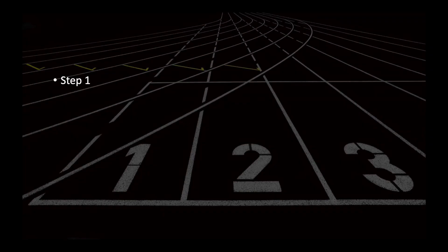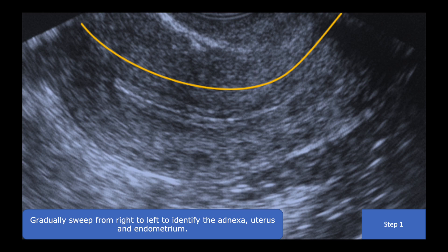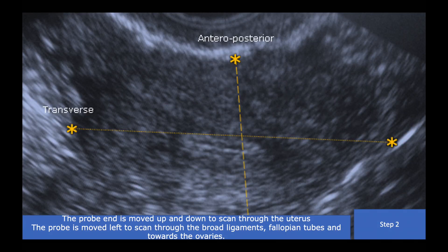In the longitudinal plane, this is the picture of the uterus that we get on a scan, and we move the probe from left to right to get the entire view. We then twist the probe and this is the view we get in the transverse or coronal plane, moving the probe from top to bottom.